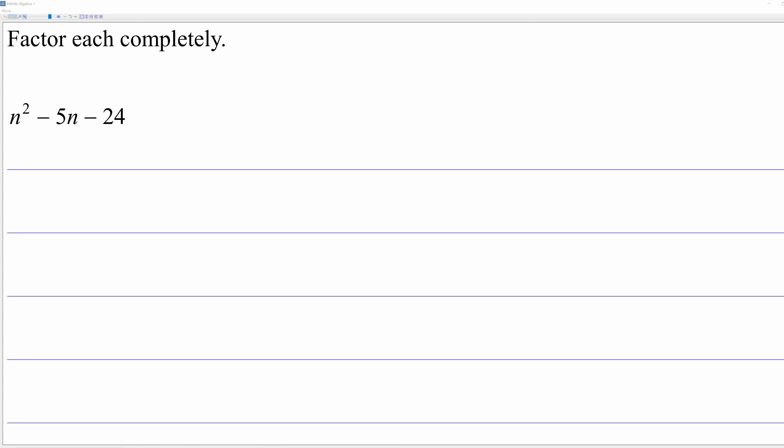This is going to be my first of several videos on factoring quadratics. What you have here is a quadratic trinomial and we're to factor that. Factoring means basically doing multiplication in reverse. We want to find two polynomials that multiply together to give you n squared minus 5n minus 24.